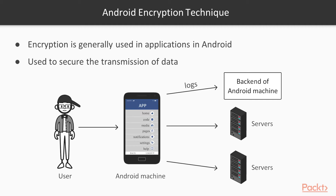Encryption is used to secure the transmission of data. As I already told you, if you want to transfer data from place A to B, C, or D, your mobile should encrypt the data. If someone tries to steal the data in between, they will only get the encrypted data. Without an encryption key, they cannot decrypt or read that data. Encrypted data is useless for an attacker. That's why almost all applications on your Android machine use encryption.